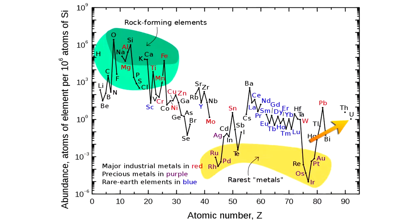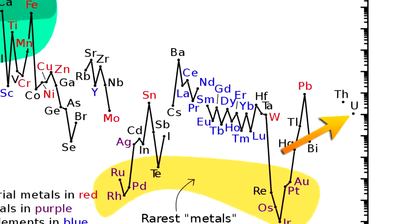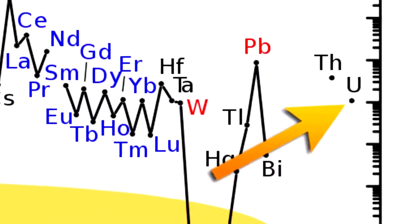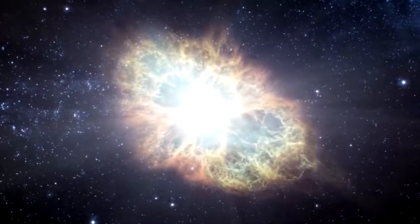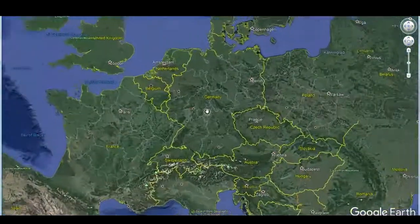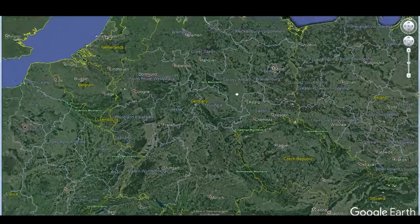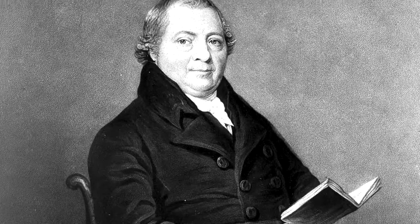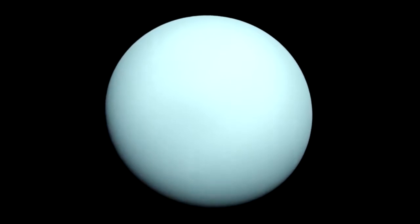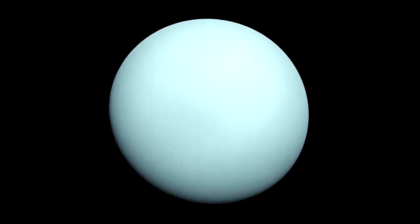Uranium is 40 times more abundant in Earth's crust than silver. It's so abundant because it forms upon rapid neutron capture inside spinning supernovas. That's why uranium was discovered quite early in Germany in the 18th century. Its discoverer, Martin Henry Klaproth, named it after a newly discovered planet, Uranus.